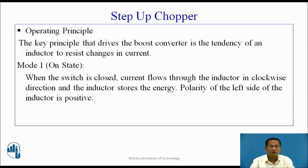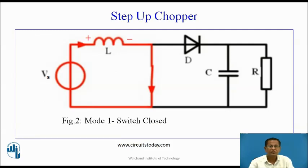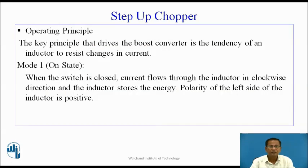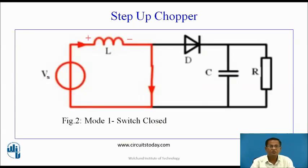Mode 1 — Ton time. When the switch is closed, current flows through the inductor in the clockwise direction and the inductor stores energy. In this duration, current flows through the input voltage source, L, and the chopper switch. The energy is stored in L during Ton. The polarity of the left side of the inductor is positive. This is the circuit diagram for Mode 1 with the switch closed.